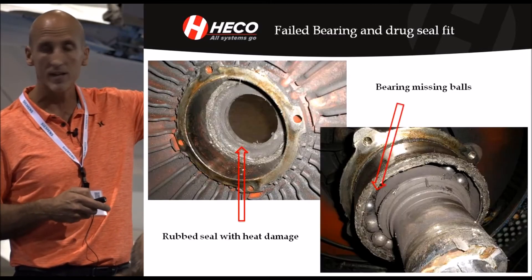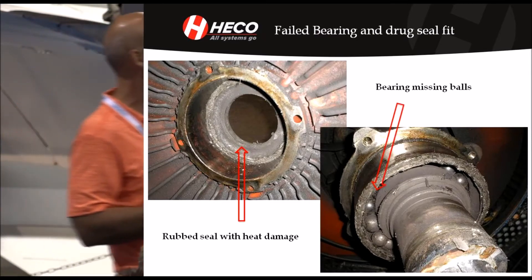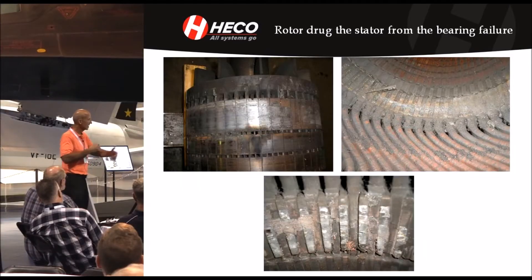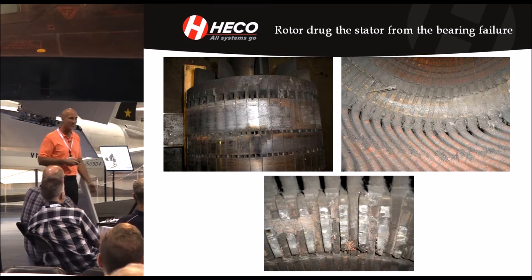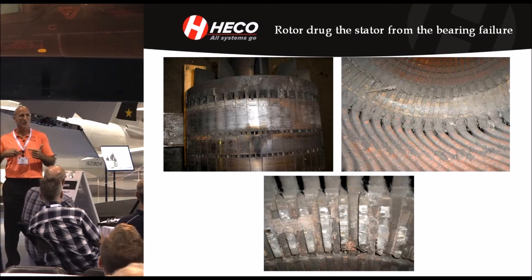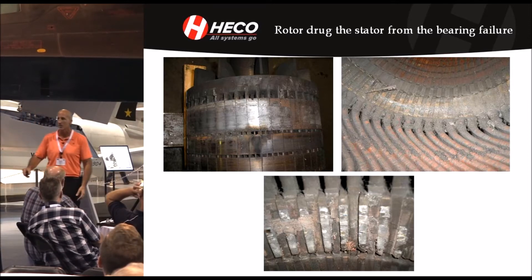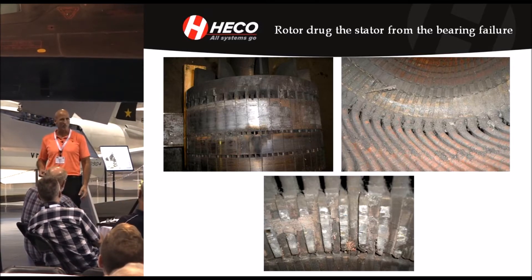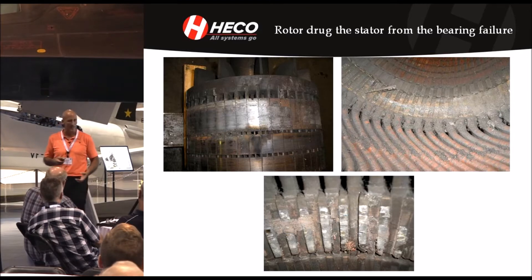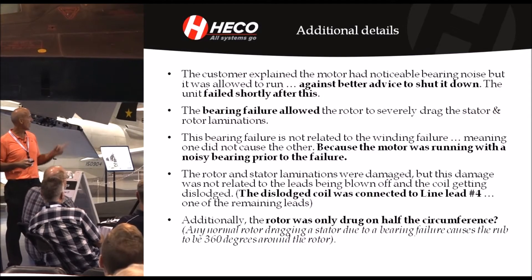The bearing was destroyed and the seal was rubbed because the bearing was destroyed. It caused heat to the shaft, and caused all this damage so that the rotor was dragging the stator — this thing was really a basket case. But what we noticed on the rotor was it only dragged about a third to half of the rotor OD. If a bearing drops and the rotor is rubbing, the rotor OD should be completely rubbed, not just half of it.